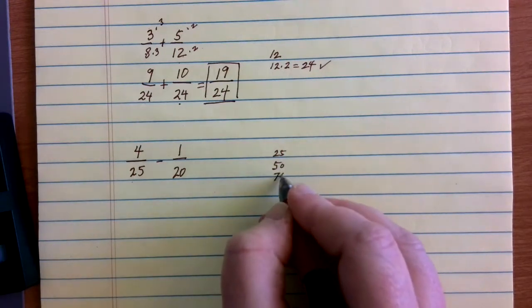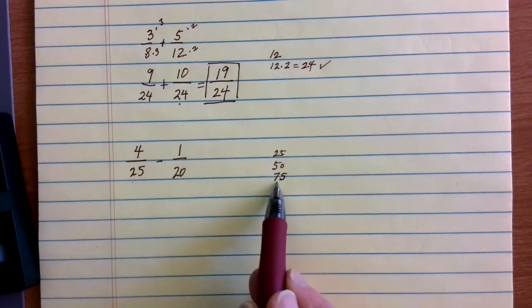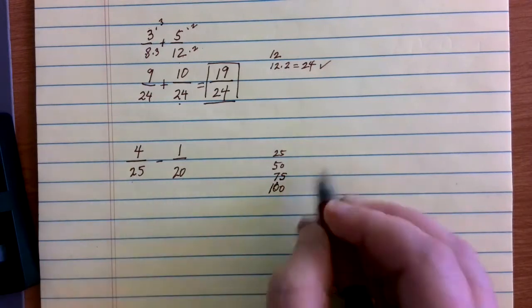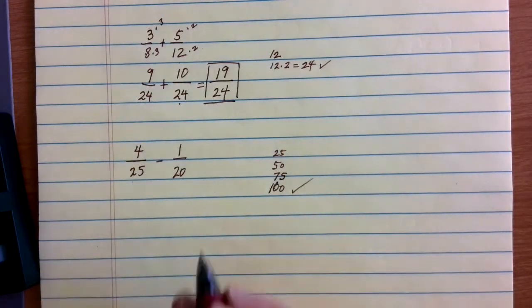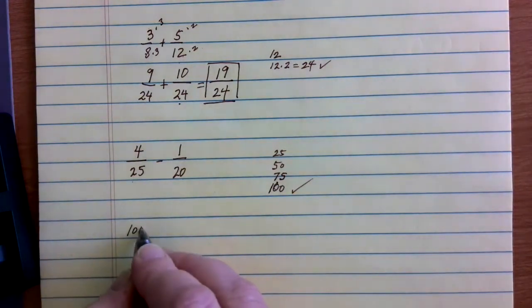Then I go back to 25—instead of 25 times 2, I'm going to try 25 times 3, which is 75. And I ask, does 20 go into 75 evenly? Not yet. So 25 times 4 gives me 100. Does 25 go into 100 evenly? It does. And I found what I can use for my common denominator, so let's go ahead and rewrite our fractions with 100 as the denominator.